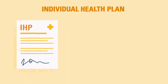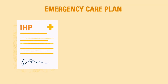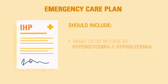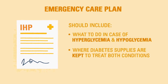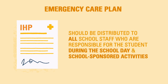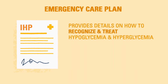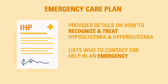As part of the IHP, the school staff member or nurse should also draft an emergency care plan for hypoglycemia and hyperglycemia. These plans should include what to do in the event of hyper- and hypoglycemia and where the supplies are kept to treat both conditions. These plans should be distributed to all school staff who are responsible for the student with diabetes during the school day and school-sponsored activities. Based on the DMMP, the emergency care plans provide details about how to recognize and treat hypoglycemia and hyperglycemia and who to contact for help.